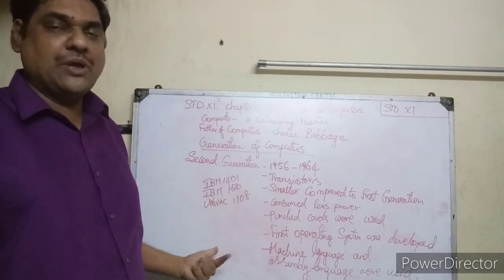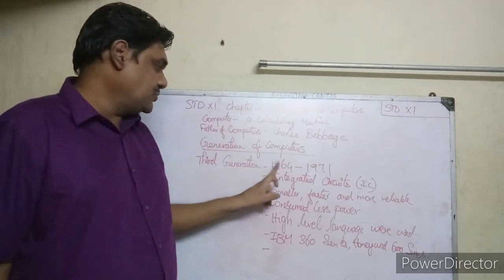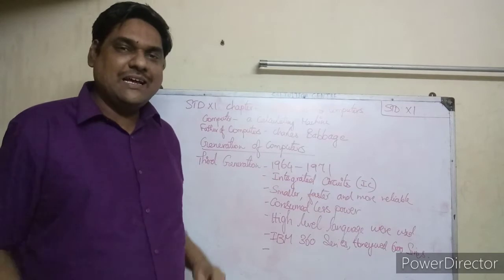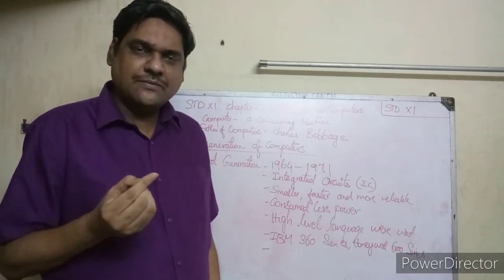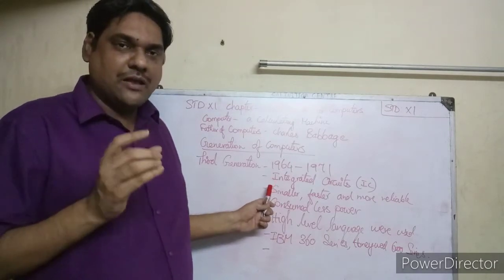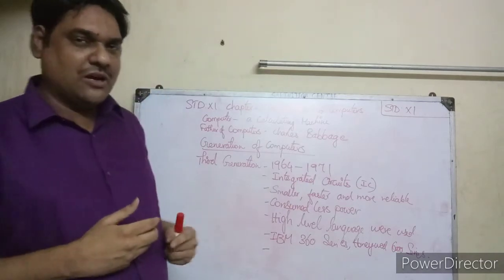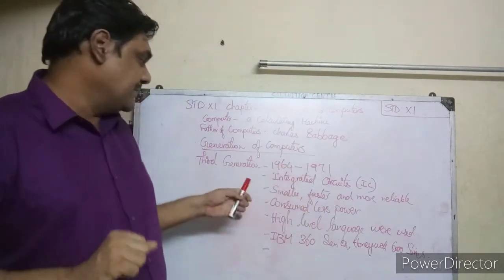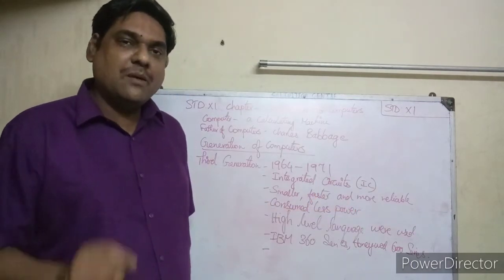Now let us move on to the third generation computers. The time period is 1964 to 1971. The main part of third generation computers is Integrated Circuits, which we call IC in short. Transistors were replaced by integrated circuits. Because of ICs, the computer size reduced to table size. Third generation computers were faster and more reliable.